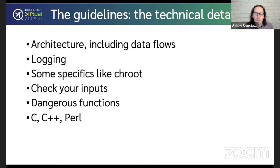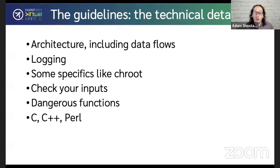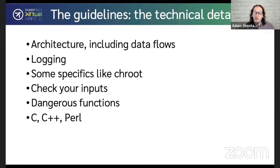What's in the guidelines? There's some discussion of architecture, including what data flows you have, some discussion of logging, and specifics like Chroot. Chroot is an early sandboxing technology, and we knew there were issues with it — for example, if you had a link out of the Chrooted area, an attacker could follow that link and break the sandbox. There was input validation; we knew about dangerous functions like gets, system, and strcpy. These guidelines were focused on C, C++, and Perl, because that's what was current at the time.